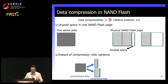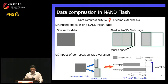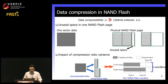For example, in MLC NAND flash memory, one memory cell stores two digital bits — one bit belongs to the lower page and the other to the upper page. The memory cells belonging to the same page are connected by a single wordline.